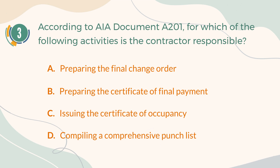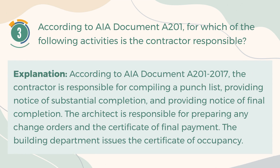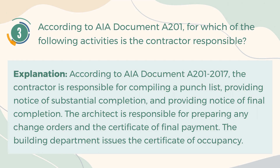The correct answer is D. Compiling a comprehensive punch list. Explanation: According to AIA document A201, 2017, the contractor is responsible for compiling a punch list, providing notice of substantial completion, and providing notice of final completion. The architect is responsible for preparing any change orders and the certificate of final payment. The building department issues the certificate of occupancy.